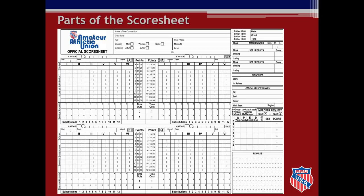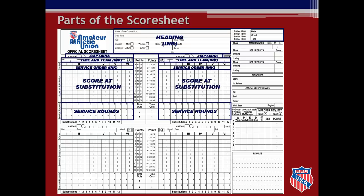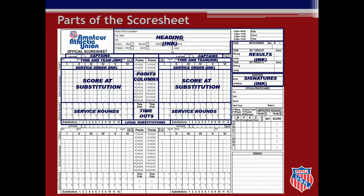Let's look at the different parts of the score sheet you will be using to keep score. During this presentation we will discuss what is contained in each section: the heading information, the captains, time and team information, service order, score, service rounds, the scored substitution section, the substitutions row, the legal substitutions area which is not used in AAU scoring, the timeouts box, the points columns, the results, the signatures, the officials names, the sanctions box, and the remarks section.